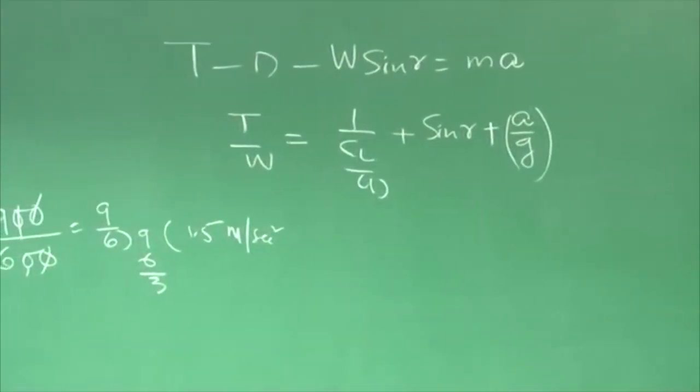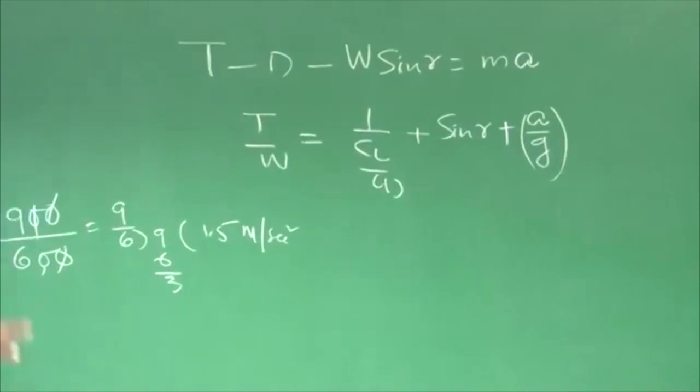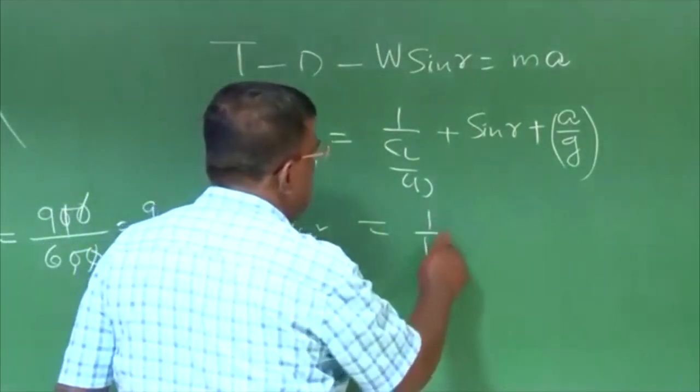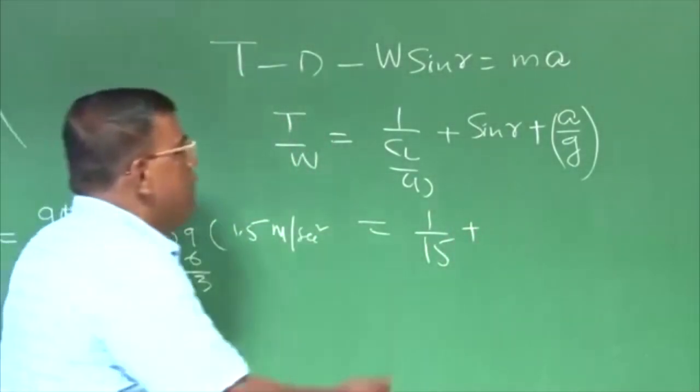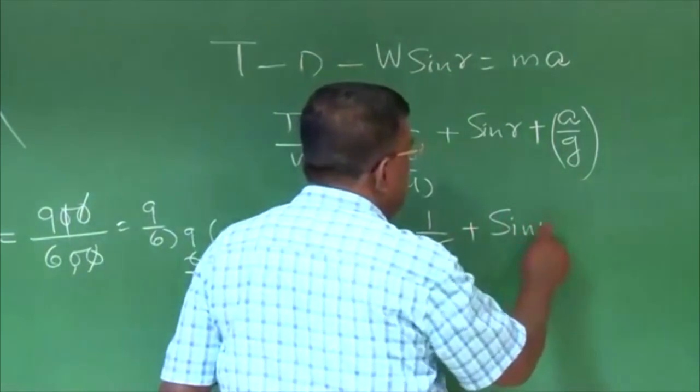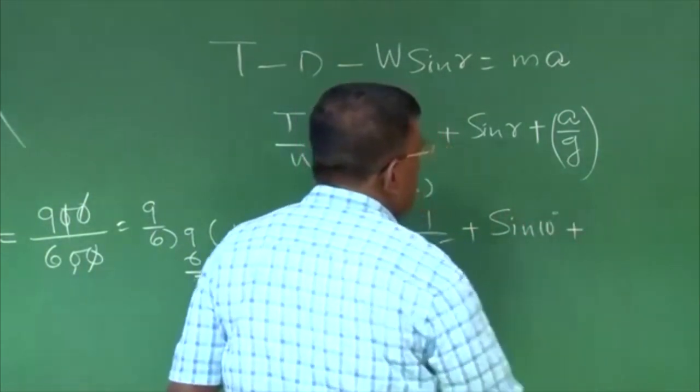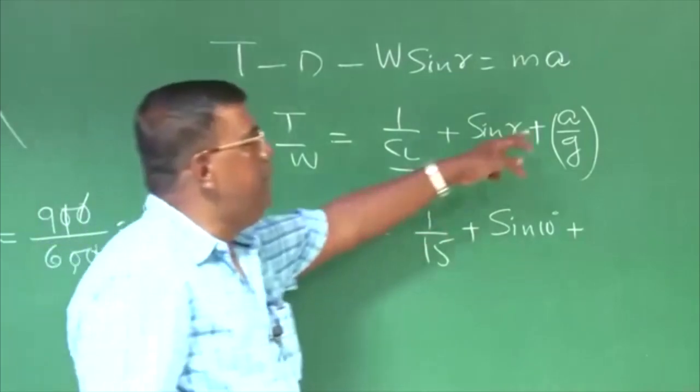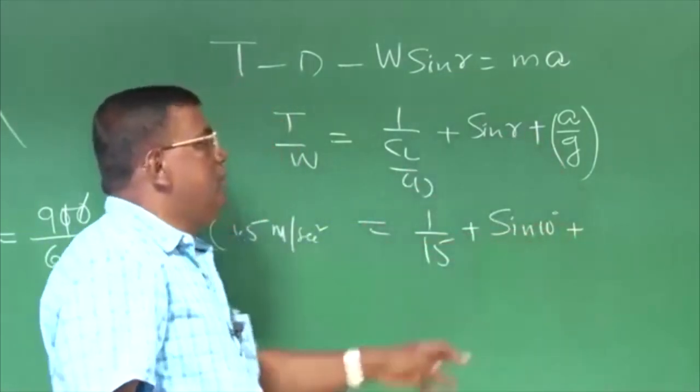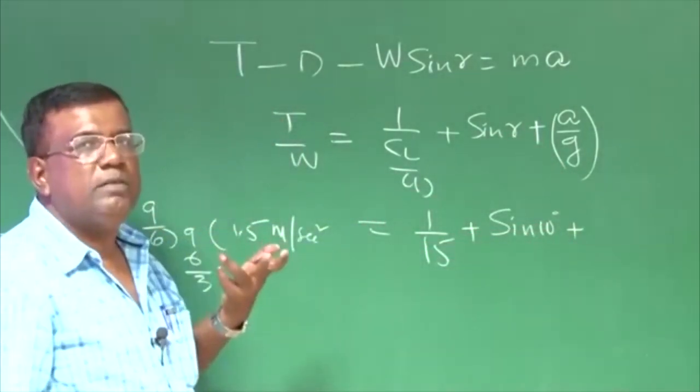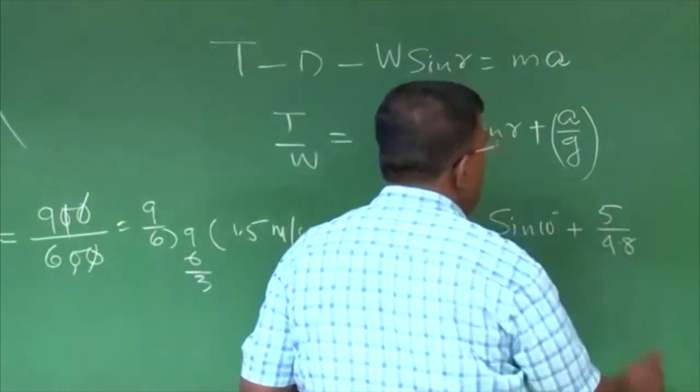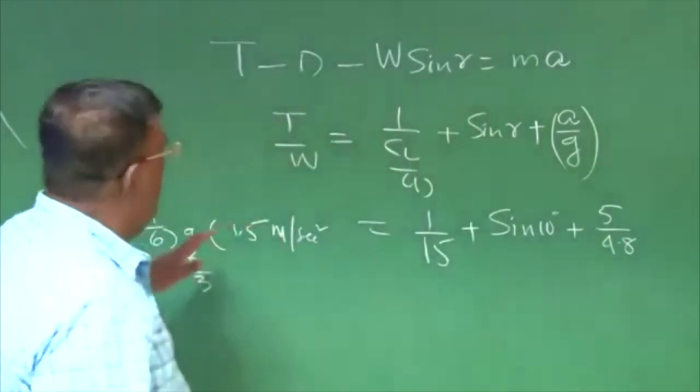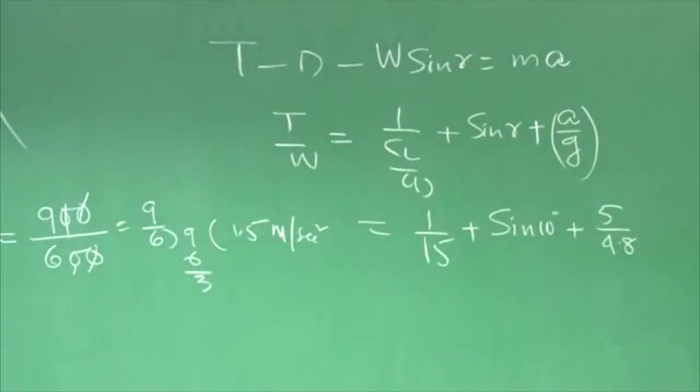As a designer, cl by cd is 15 or 13, so I put 15. I want to climb at an angle of 10 degree, let us say. So I put it here sin 10, and what sort of acceleration you want, you put that number divided by 9.8. So if you want 5 meter per second square, let us say, then it is 5 by 9.8. So you will get typical value of t by w required during climb.